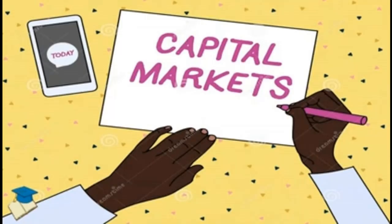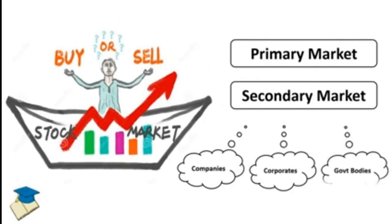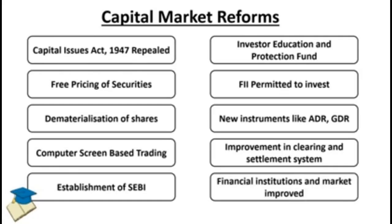Coming to the capital market reforms. There are two types of capital markets: the primary market and the secondary market. One key reform was free pricing of securities — earlier the government had put restrictions on the issue price of IPOs, saying only ₹10 should be the issue price. Now, shares and IPOs can be issued at any price, and price discovery happens based on the free play of demand and supply.